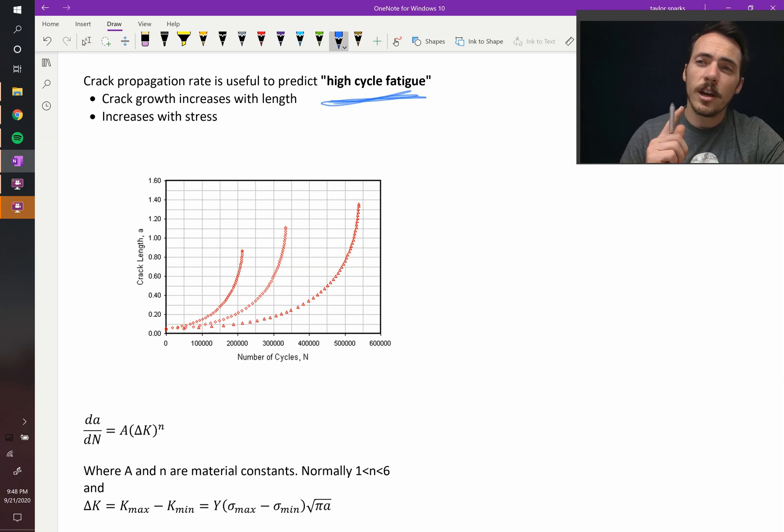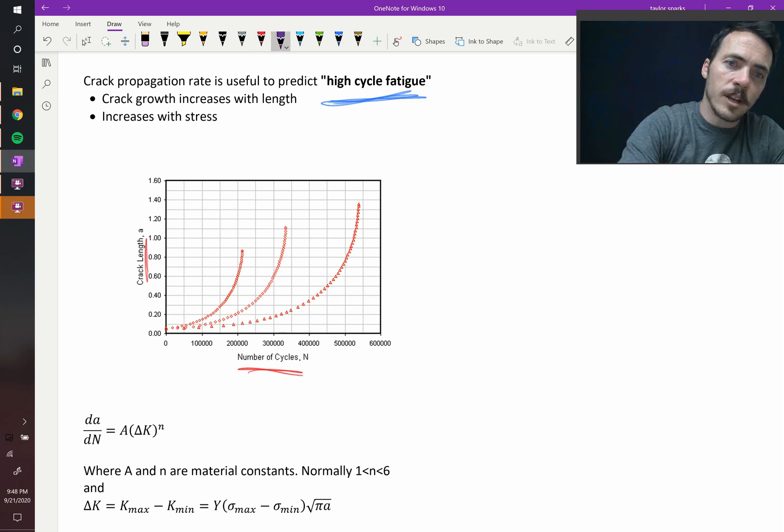Experiments have shown the following. Crack growth rate increases with length, so the bigger a crack is, the faster it grows, and it increases with stress. For example, these types of curves are very typical, where the crack length is plotted against the number of cycles. First off, at a given stress, let's say that this right here is stress 1, this is stress 2, and this one would be at stress 3.